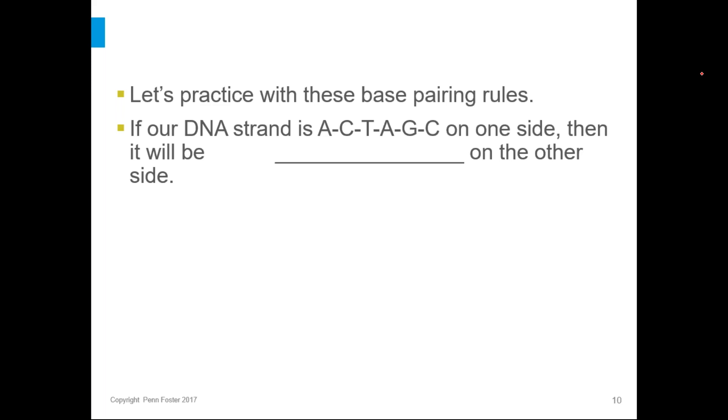Okay, so hopefully that was enough time to figure it out. We always have A bonds to T, C bonds to G, T bonds to A, A bonds to T, G bonds to C, and C bonds to G. So if one side is A, C, T, A, G, C, the other side is going to be T, G, A, T, C, G.